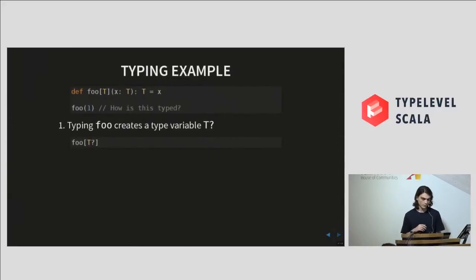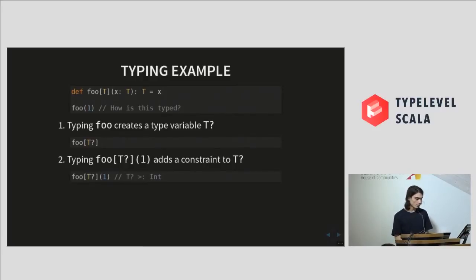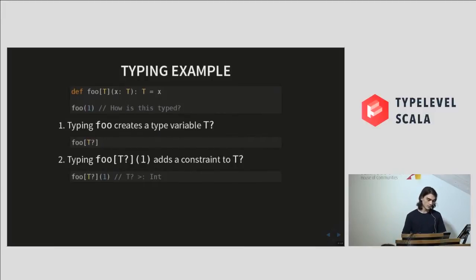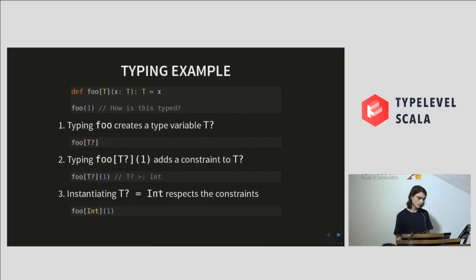Let's continue with our example of foo. The first thing we do is create a type variable T — I'm just going to call it T for foo. Because the type parameter of foo in this call is inferred, we type foo T of one. Doing this type checking adds constraints on T: it must be a supertype of int. So T is a supertype of int. And finally, we instantiate T to int, because it respects the constraints and allows our program to type-check.